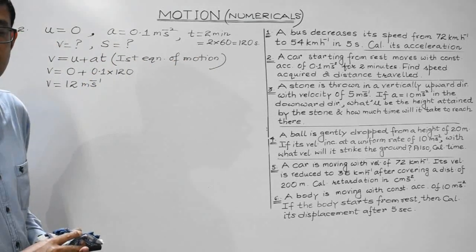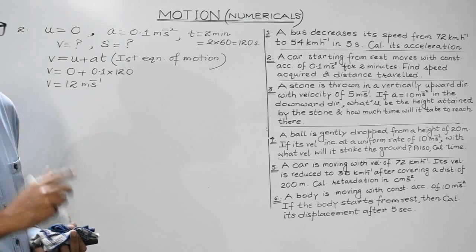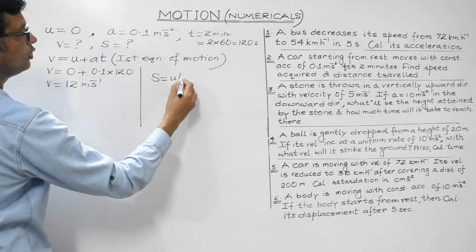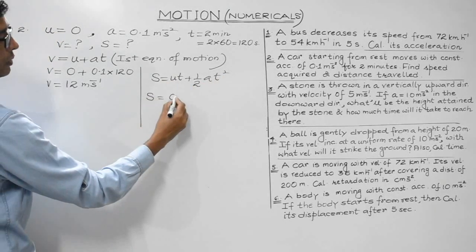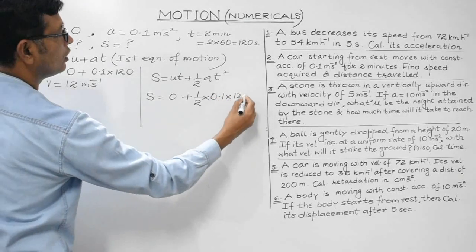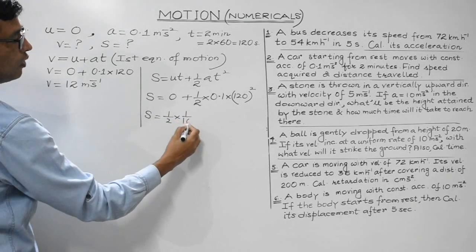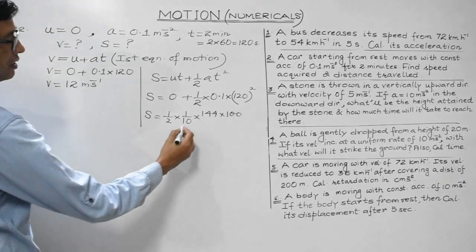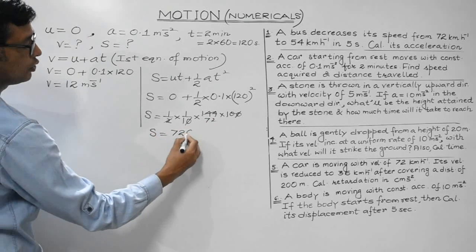For the distance covered, we can use either the second or third equation of motion. Using the second equation S = ut + ½at²: u is zero so that term vanishes, giving S = ½ × 0.1 × 120² = ½ × (1/10) × 14400 = 720 meters.